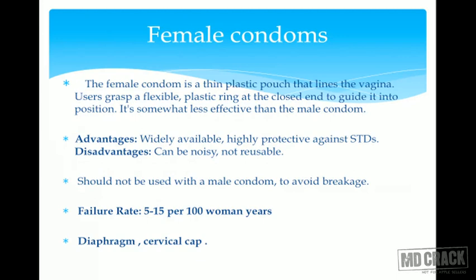Female condoms are not very popular in India. They are thin plastic pouches lining the vagina. They are somewhat less effective than male condoms, but widely available and highly protective against STDs including HIV. Disadvantages include being noisy, non-reusable, and they should not be used simultaneously with male condoms to avoid breakage. Failure rate is 5–15 per 100 woman-years.